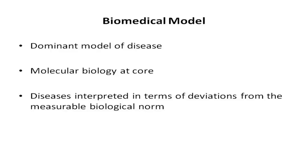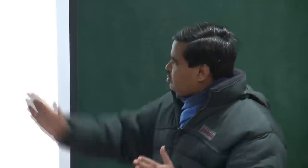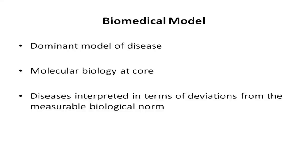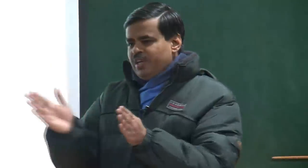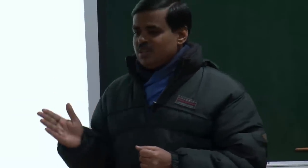The main issue here is that diseases are accounted for by deviation from the norms. There is a defined norm with respect to certain biological variables, and how much you deviate from that norm defines whether you have the illness or not. The severity of the disease is also defined with respect to the extent of deviation.